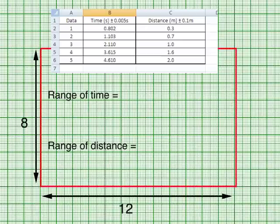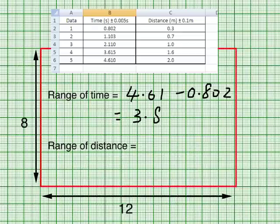To compute the range of values of time, you use the biggest value, which is 4.61, to take away the smallest value, 0.802, and you get a value of approximately 3.8. Well, you have to round it off to the bigger value so that all the plot points for time will go into the graph. When I round it off, it will be about 4.